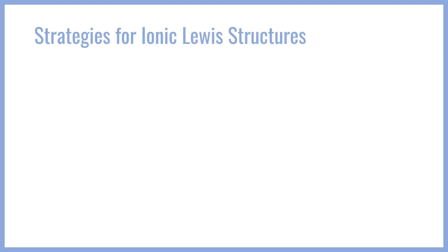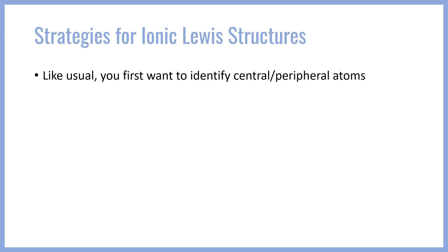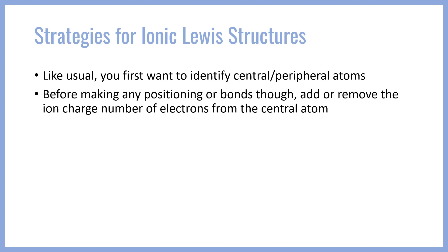The strategies for ionic Lewis structures are going to be very similar. We're going to, like usual, identify the central and peripheral atoms first. And then, before making any positioning or bonds, this is where the difference is: we're going to add or remove the ion charge number of electrons from the central atom.